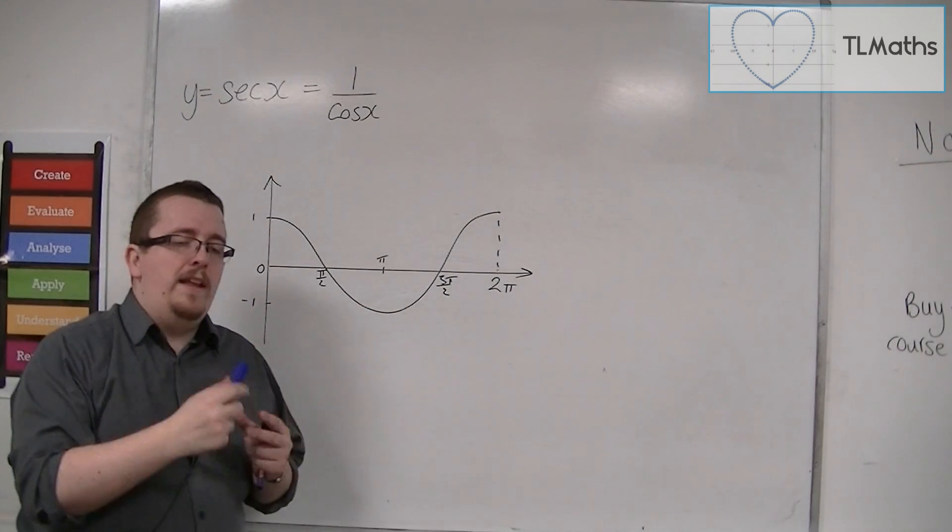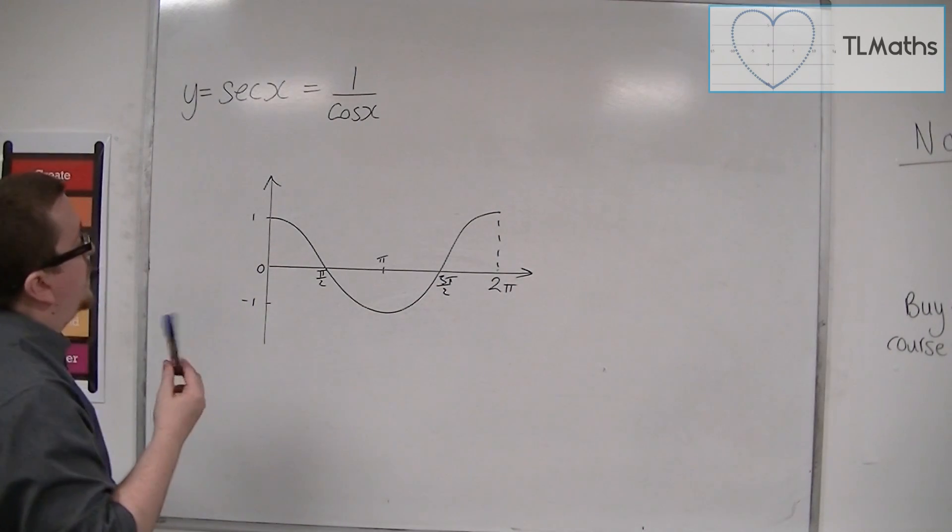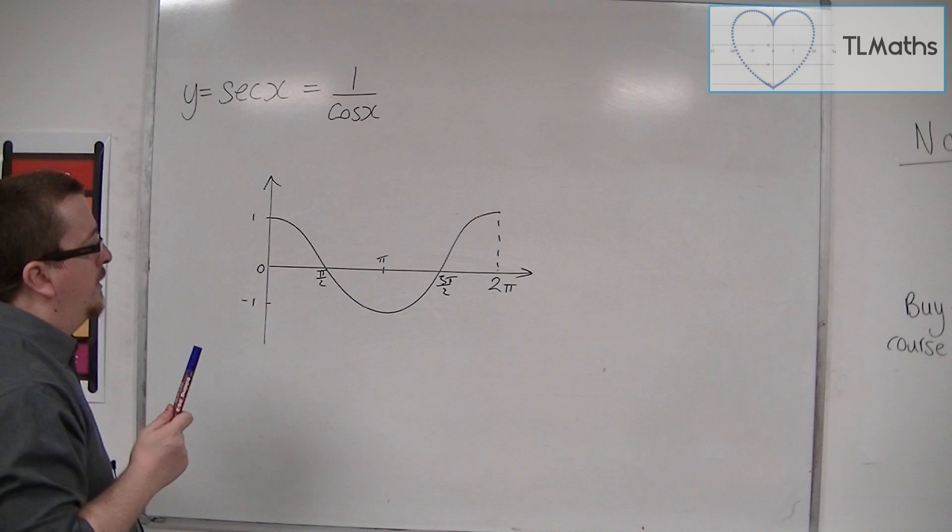So let's see what 1 over cos must look like. What does sec look like?